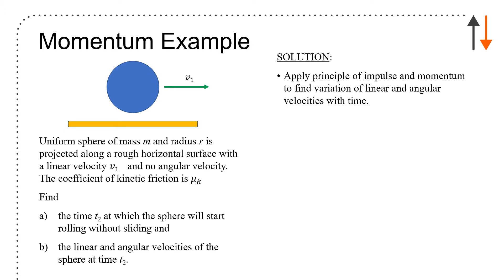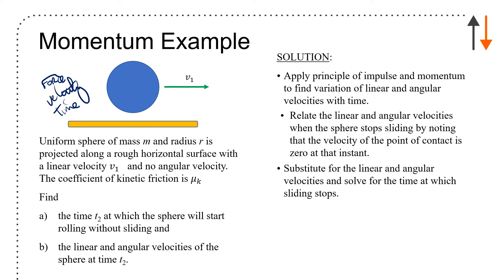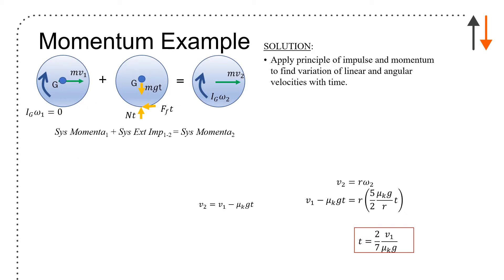Apply the principles of impulse-momentum because it's a time problem. I have a problem where I have a force associated with the weight, and I have velocity and time. Relate both the linear and angular velocity when the sphere stops slipping by noting that the velocity at the point of contact is zero. Then substitute the linear and angular velocity and solve for the time at which slipping stops. Evaluate linear and angular velocity at that instant.